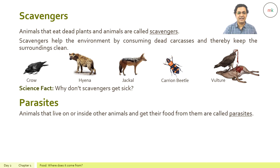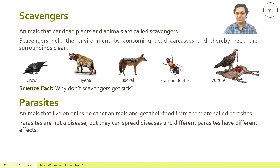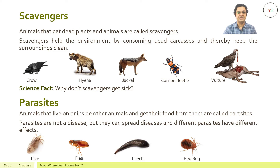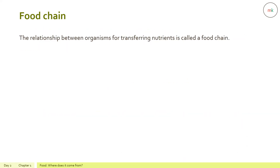Animals that live on or inside other animals and get their food from them are called parasites. Parasites are not a disease, but they can spread diseases, and different parasites have different effects. Examples include lice, flea, leech, bed bug, and tapeworm.